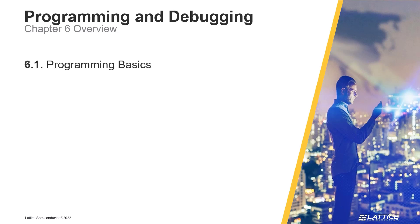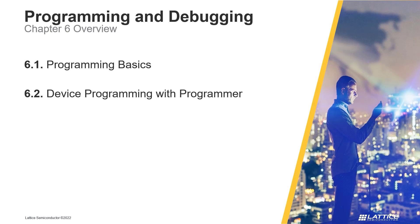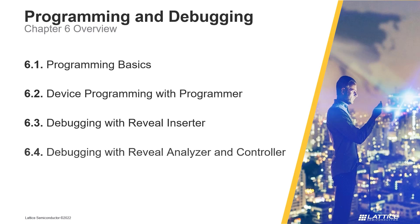In the first section, Programming Basics, we will review the general flow for programming a device using Radiant. In section two, Device Programming with Programmer, we will discuss Radiant's Programmer tool. In the third section, Debugging with Reveal Inserter, we will introduce Radiant's Reveal Inserter tool and discuss how it can be used to add debug cores. In the fourth section, Debugging with Reveal Analyzer and Controller, we will discuss Reveal Analyzer and Controller.